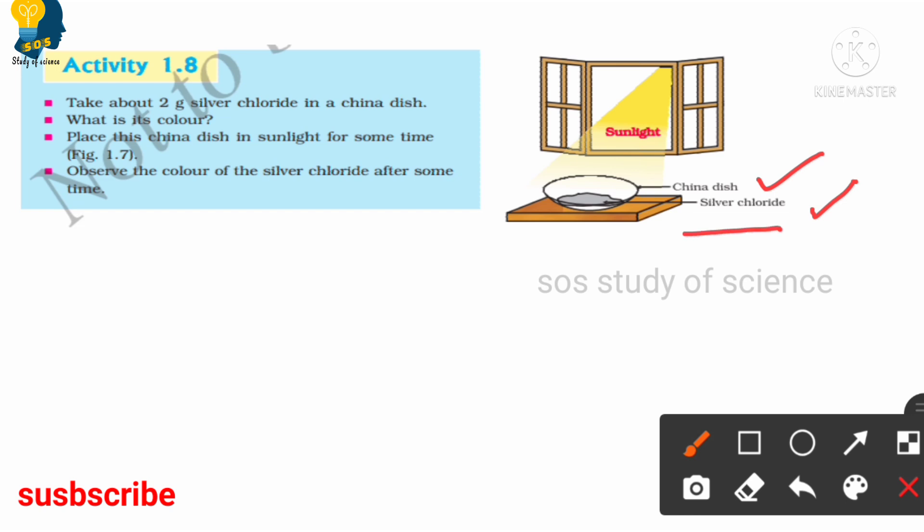Now, when we keep the silver chloride under the sunlight, silver chloride undergoes decomposition reaction. Why is it decomposition? You need to understand because here there is only one reactant. When a single reactant undergoes decomposition to form 2 or more products, it is said to be an example for decomposition reaction. And as this decomposition reaction is taking place in the presence of sunlight, this is an example for photolytic decomposition reaction.